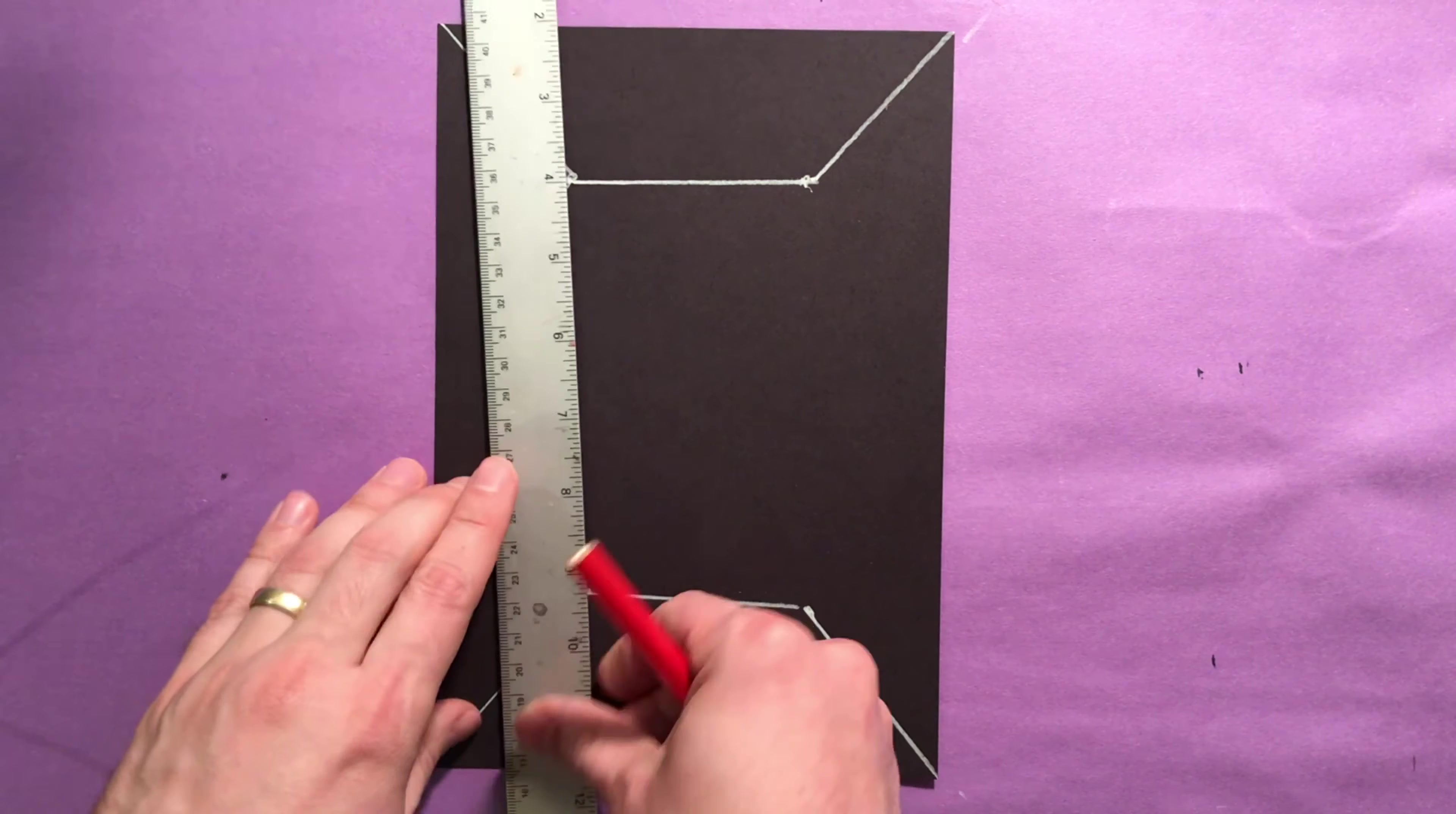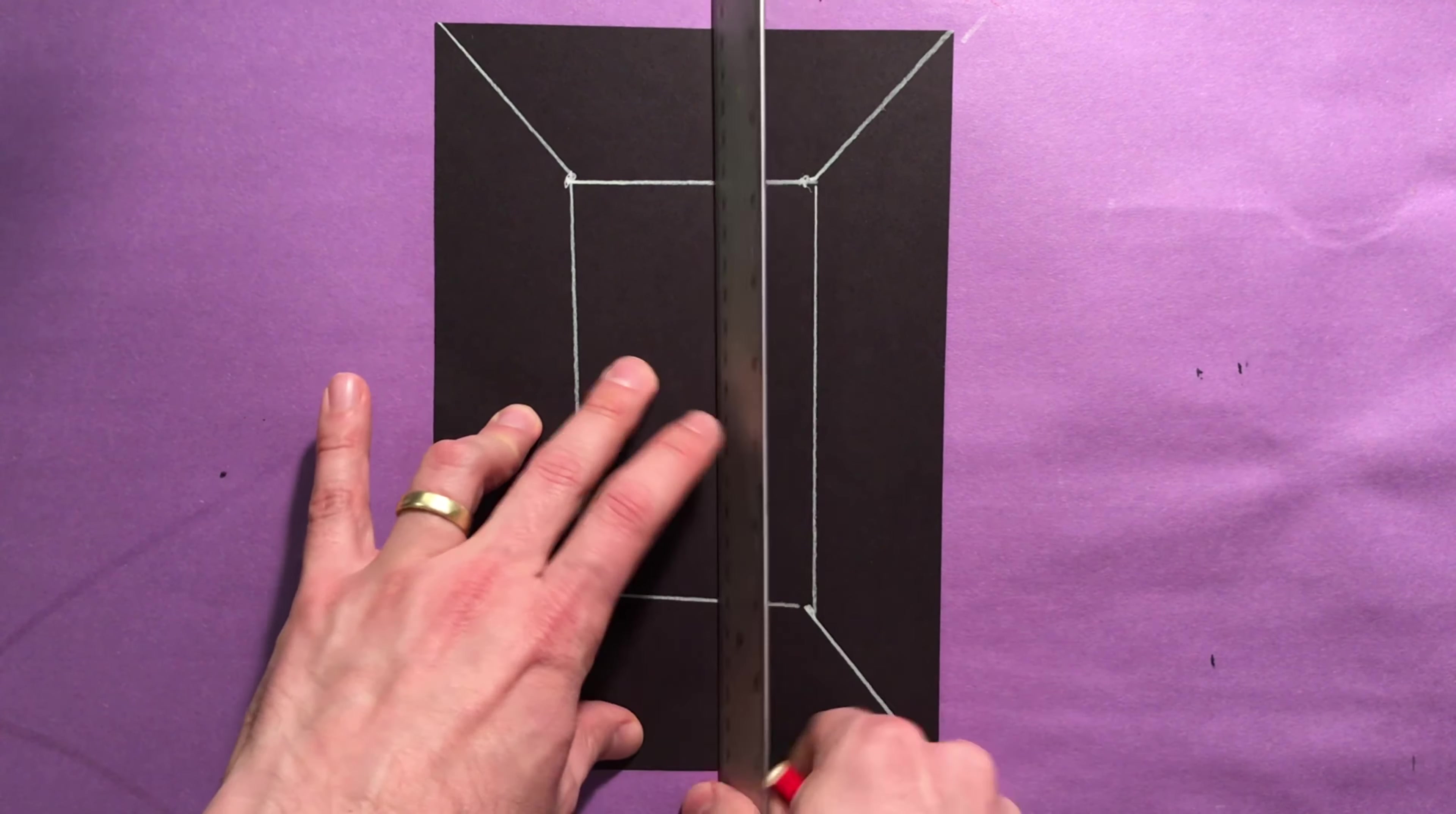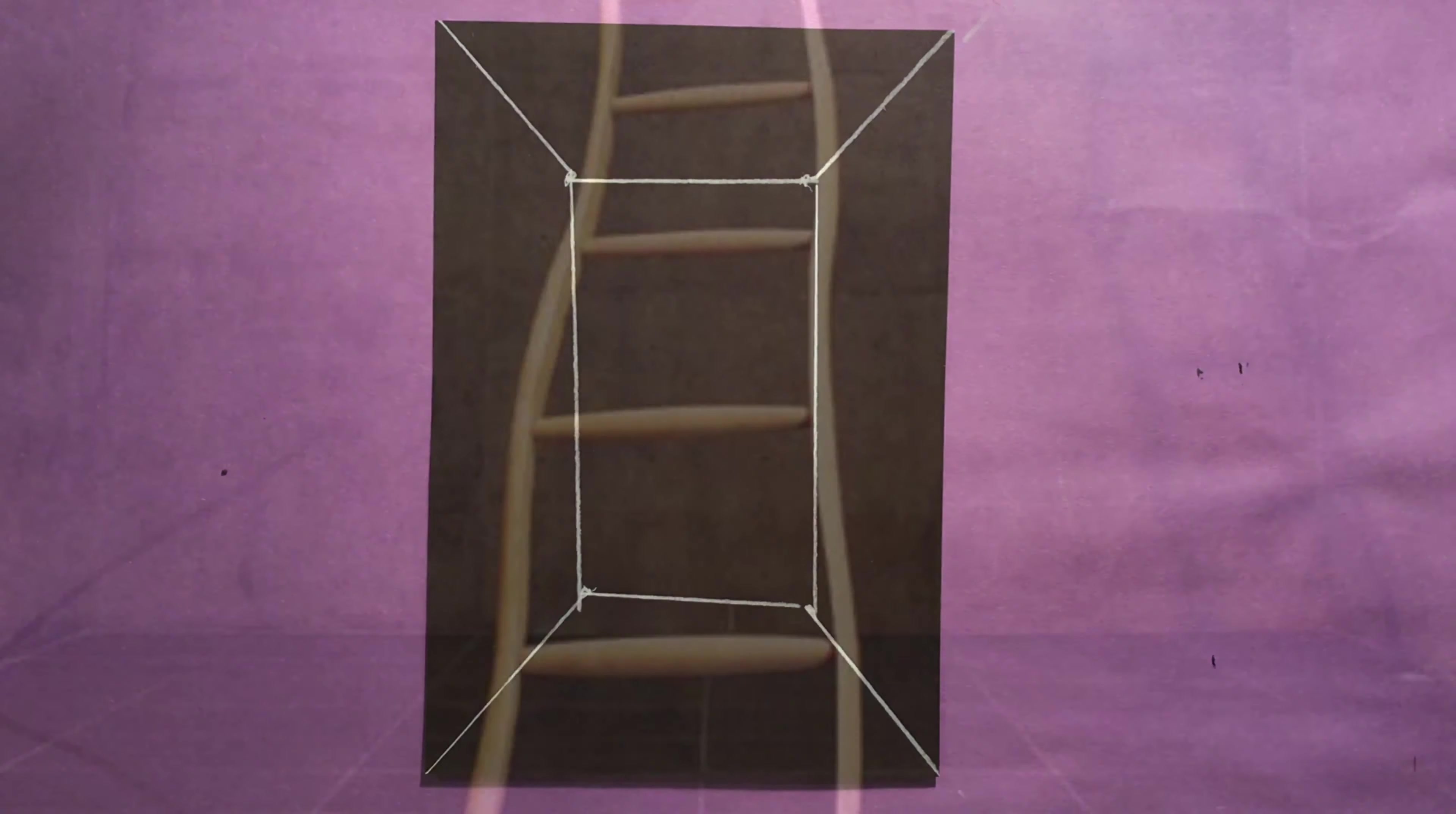With me so far? Finally, I'm going to connect the dots on the top of the page with the dots on the bottom of the page with two straight lines. Wow! Look at that! It looks like a room! If it didn't work out perfect the first time, just keep practicing. You will get it.